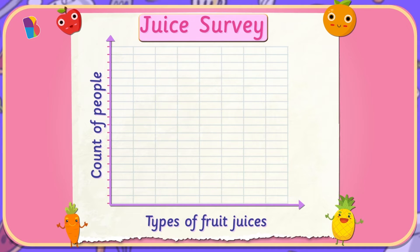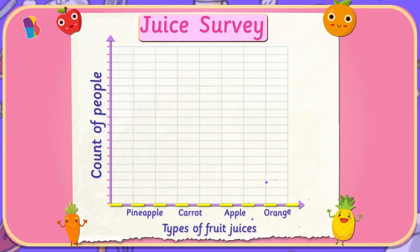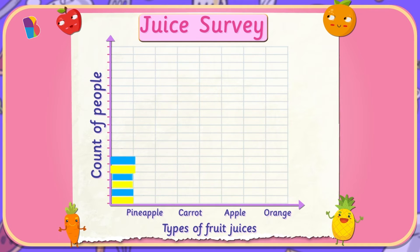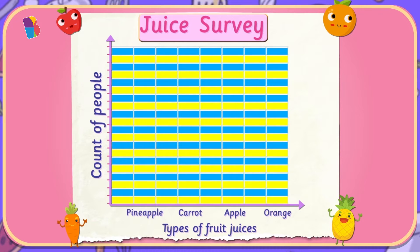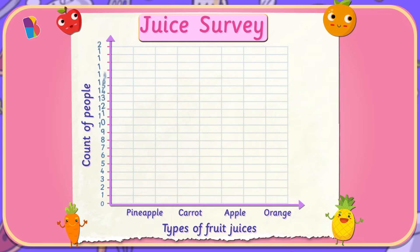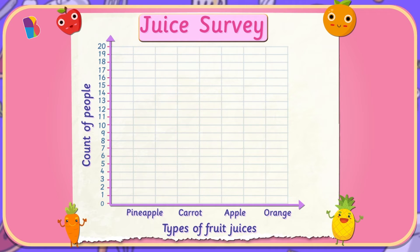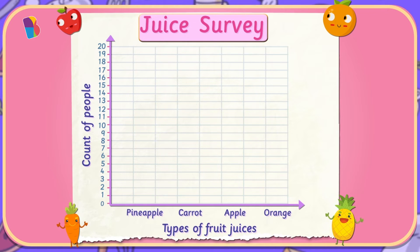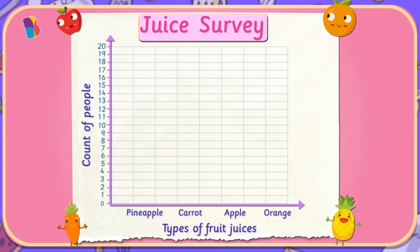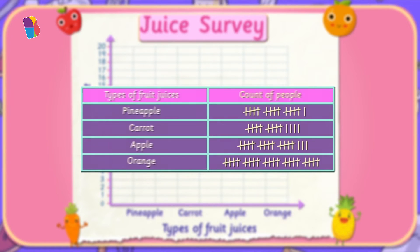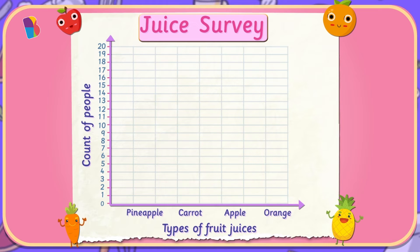Got it! First, we write the types of fruit juices on the horizontal axis to decide where their bars will be drawn. Now, let's call each box on this graph a unit. To decide how to plot our data, we must check the smallest and largest numbers that must go on the vertical axis. We always start at zero and extend up to the largest number in our collected data. We also need to ensure that the numbers on the axis are spread out evenly. We must define what one unit — one box on this graph paper — stands for. There seems to be a problem: the maximum number on the vertical axis is 20, but the count of people who like orange juice is 30. How are we supposed to have a 30-unit long bar when the vertical axis only goes up to 20?